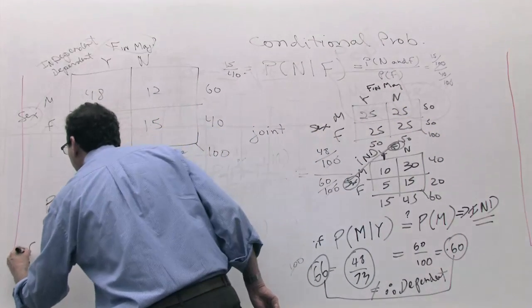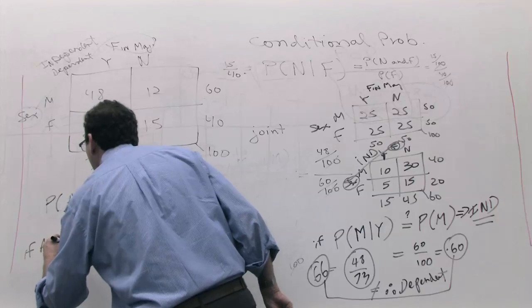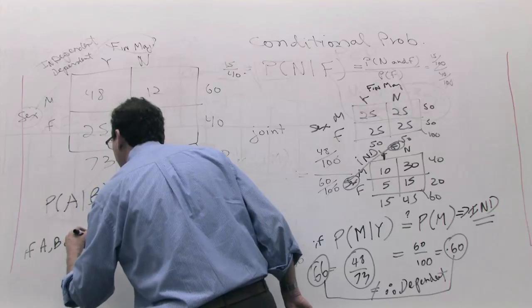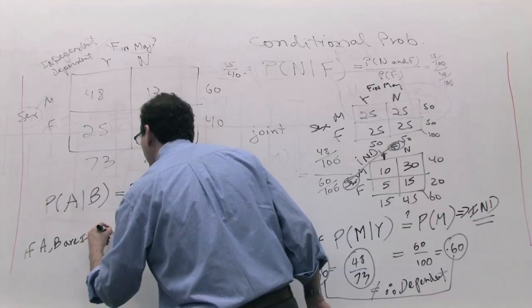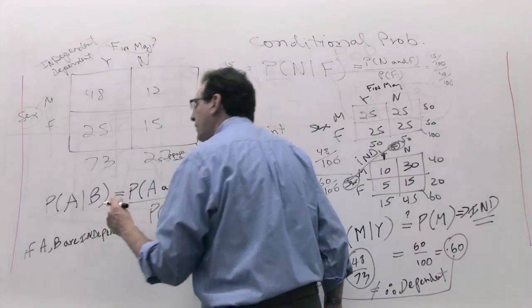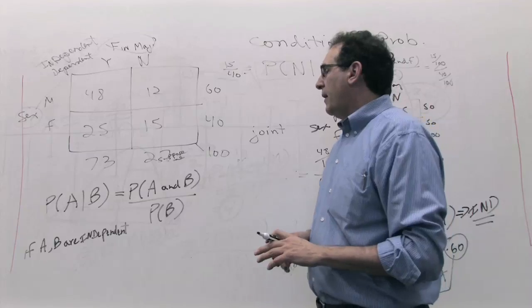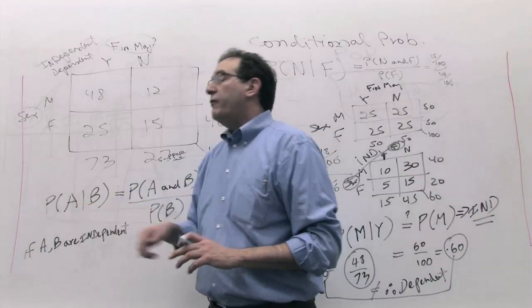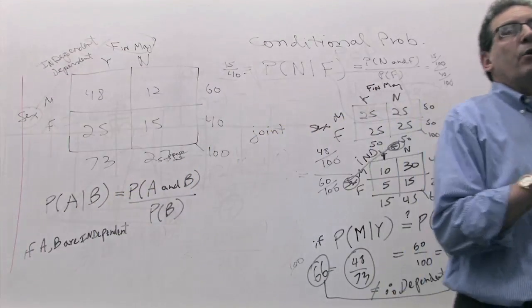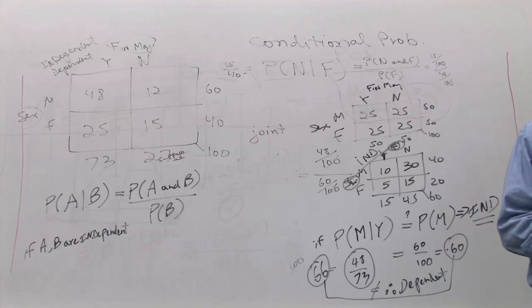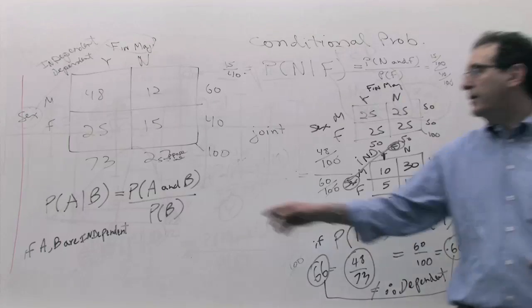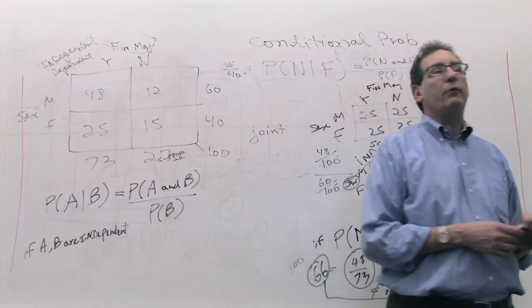Now, if A and B are truly independent, let's start out by assuming the two variables are independent. What's another way of writing A given B? If A and B are totally unrelated to each other, one way of writing it is A and B divided by B. What's another way?